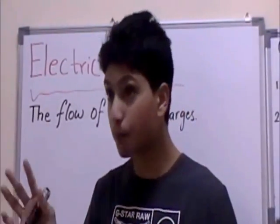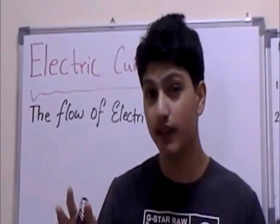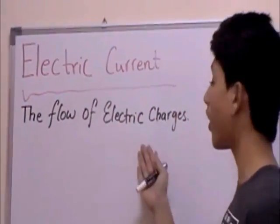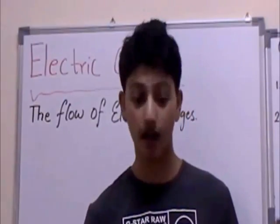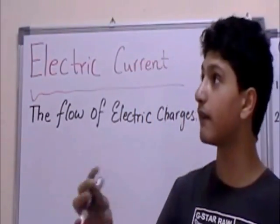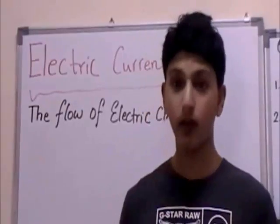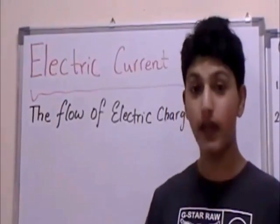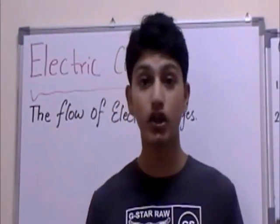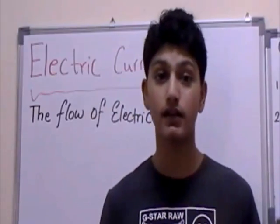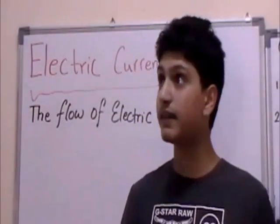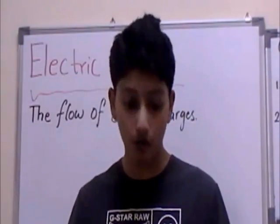Putting this idea in its simplest form: electric current is the flow of electric charges. It can flow through a solid conductor from positive charges that are fixed to negative charges, which are known as electrons, as we discussed in our earlier section. Basically, the charges will flow.